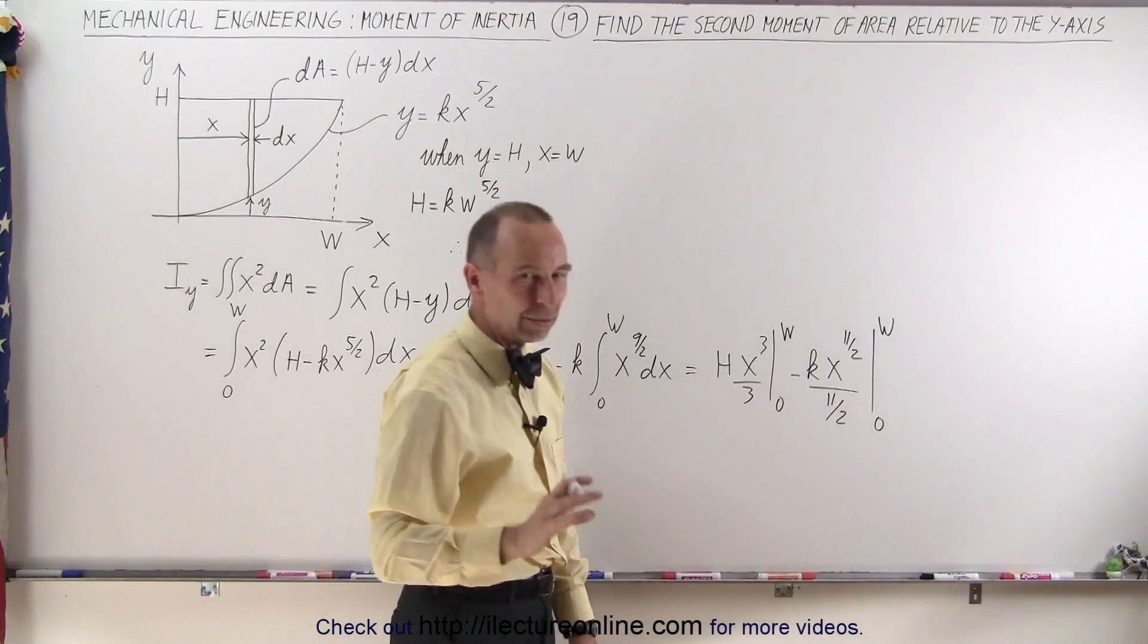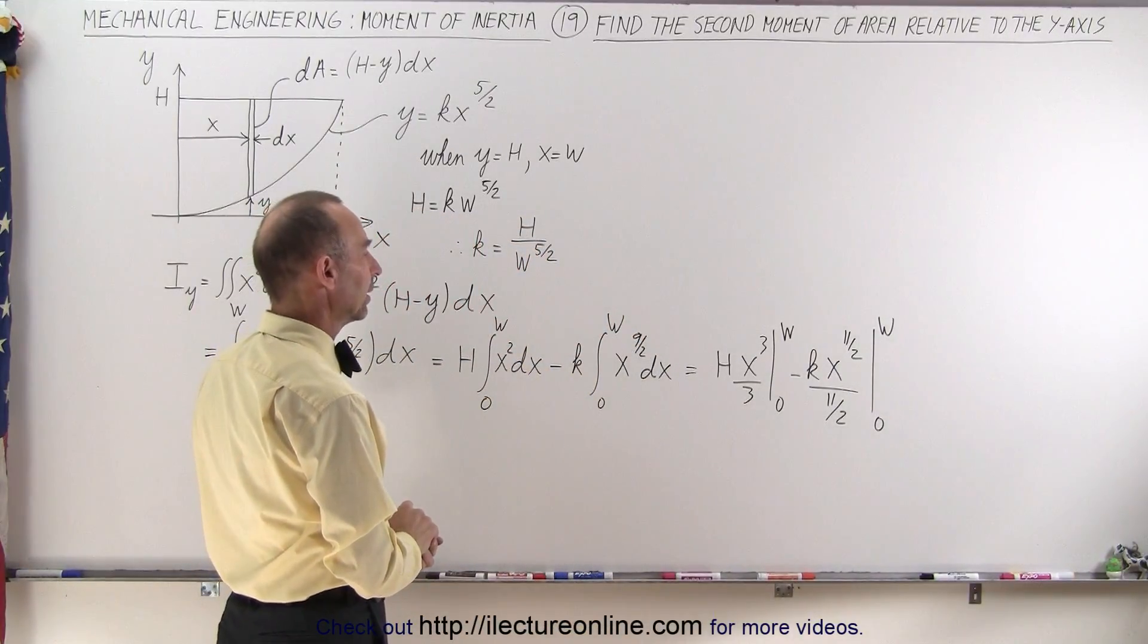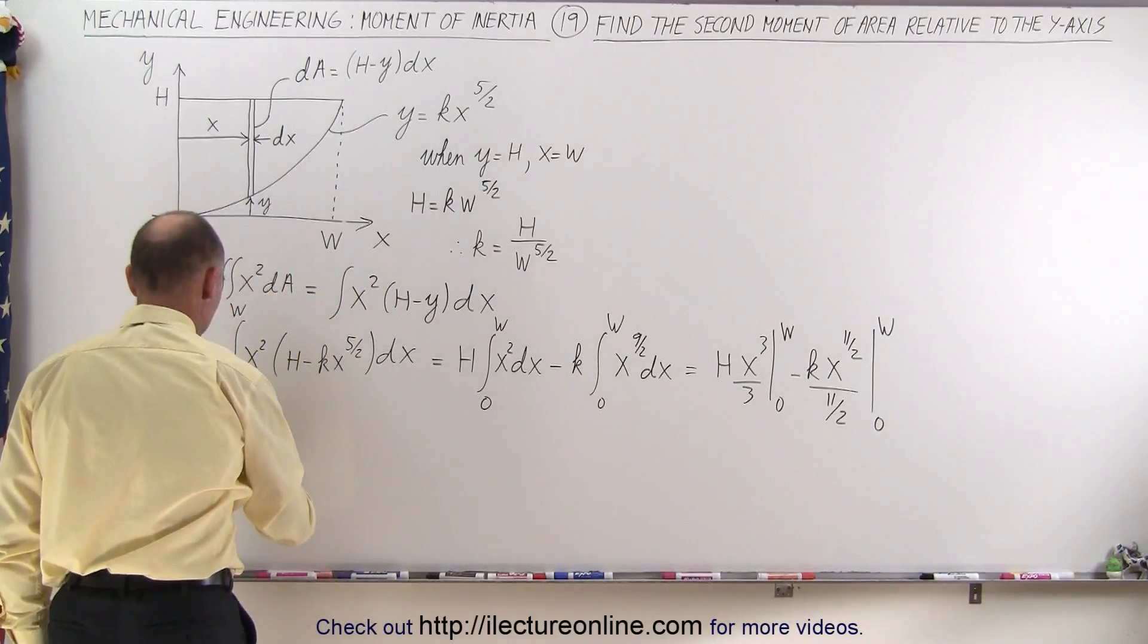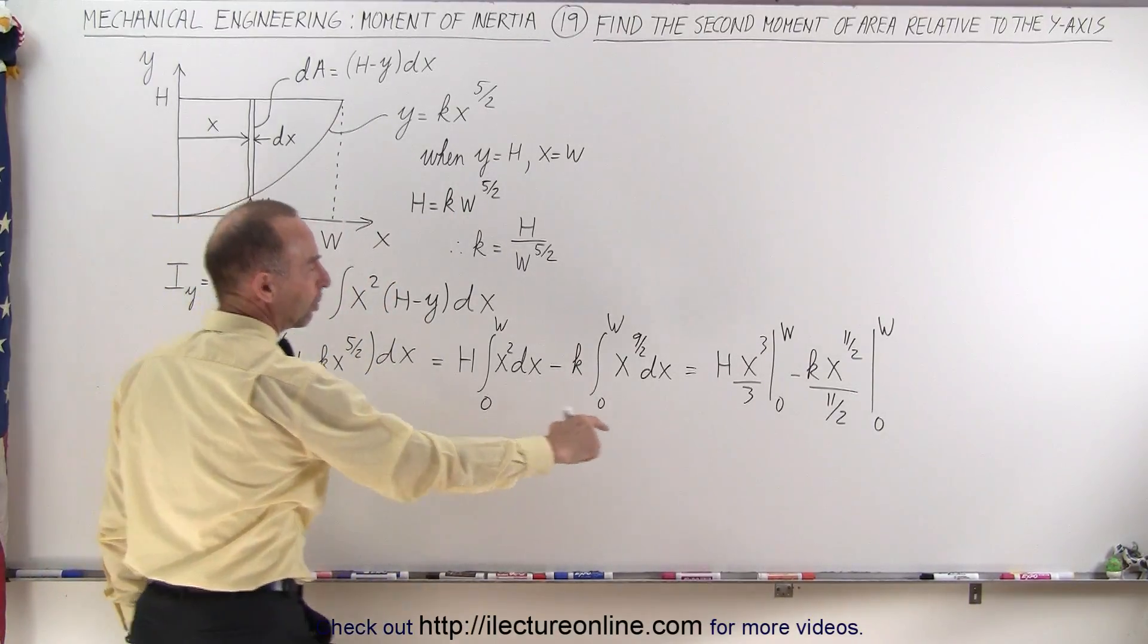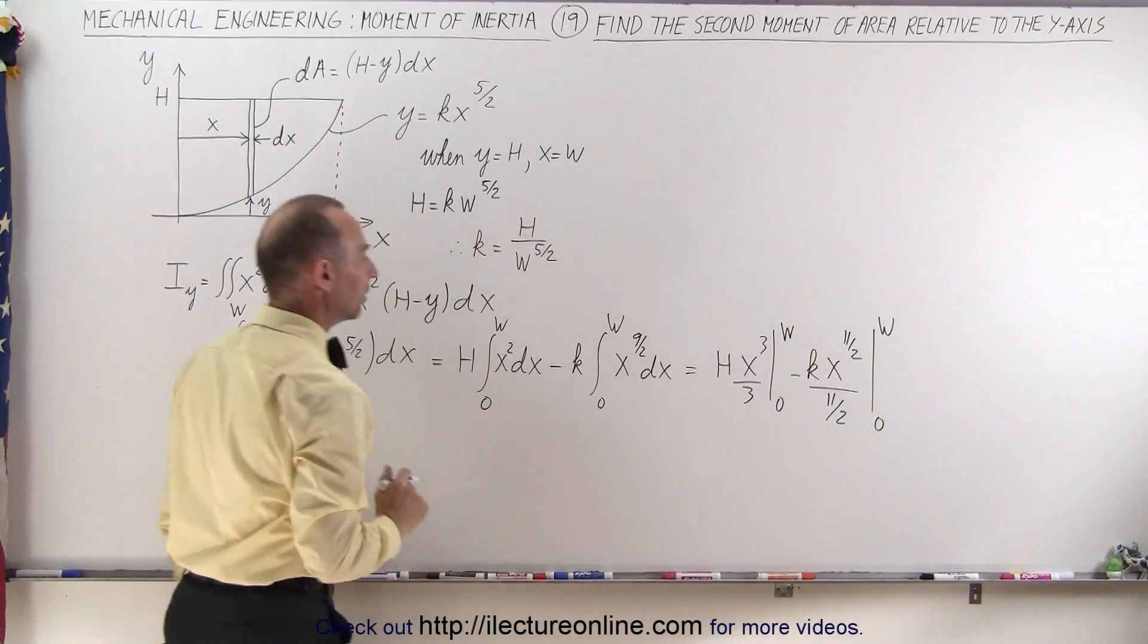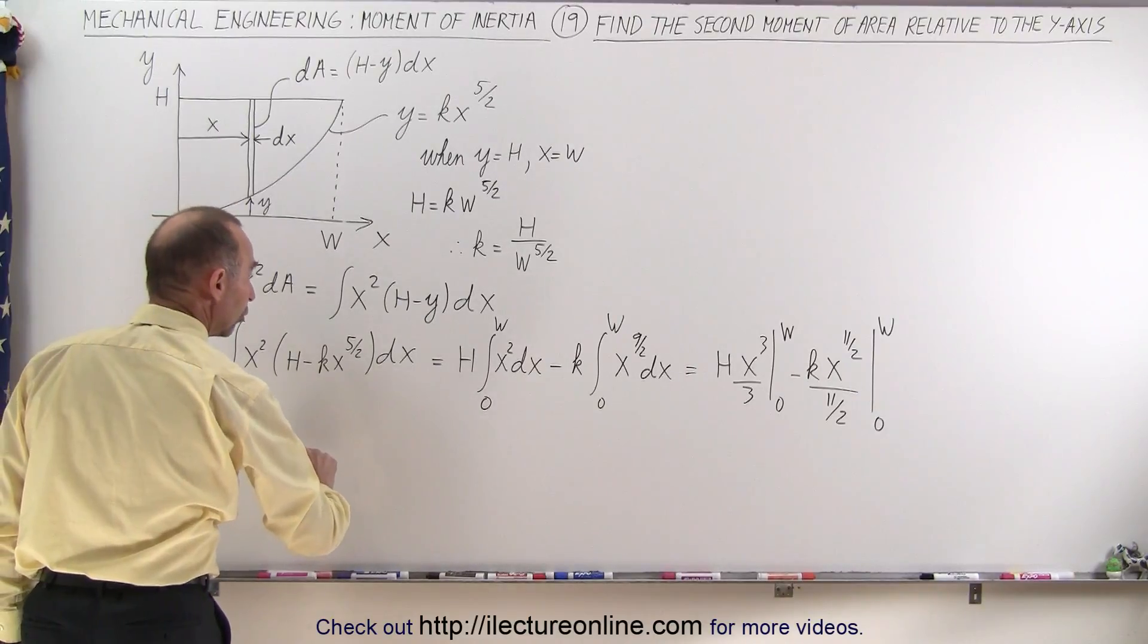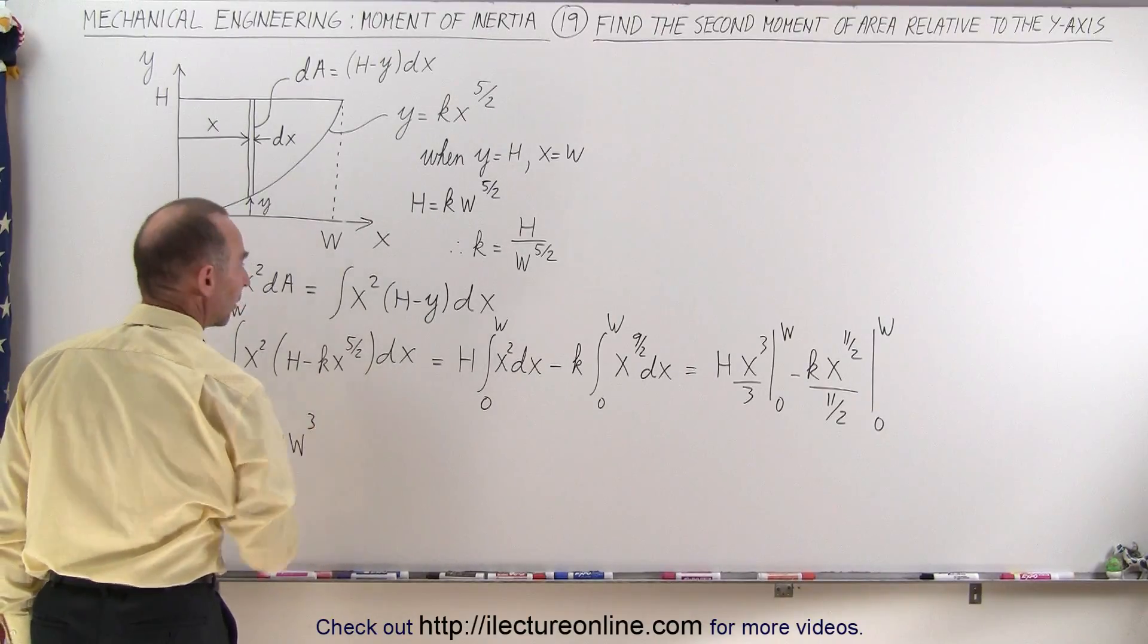Now it looks a little mean, but I think when we plug in the values, things will simplify. Alright, so this becomes equal to, when you plug in the lower limits, you get 0, so we can ignore the lower limits, we only need the upper limit, so there we get 1 third hw to the third power.